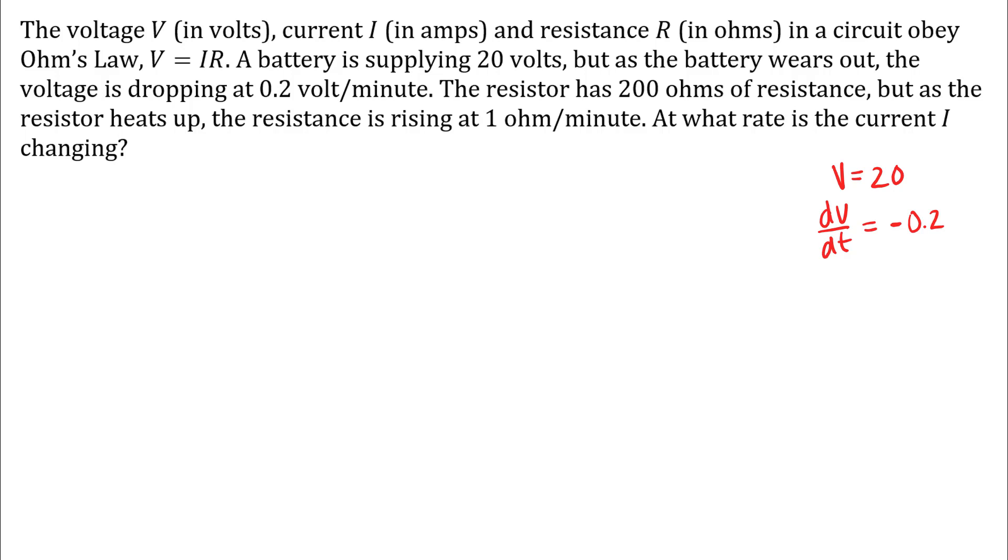The resistor has 200 ohms of resistance, so R is 200. As the resistor heats up, the resistance is rising at 1 ohm per minute, so we have dR/dt is positive 1. And we want to know at what rate is the current I changing, so we need to find dI/dt.